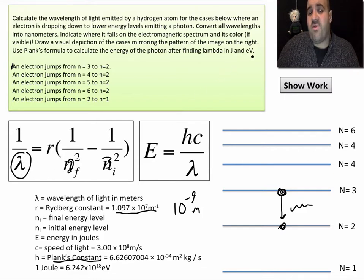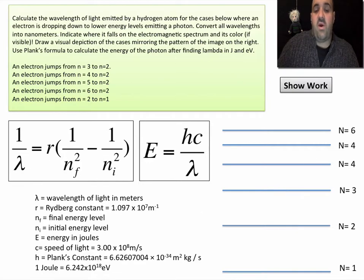That'll give you an answer in joules for the energy of that wavelength. Once you do that, you're going to convert that into electron volts using this ratio. One joule is 6.242 times 10 to the 18 electron volts. So that's a simple conversion factor.